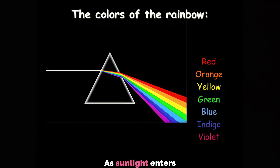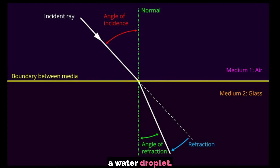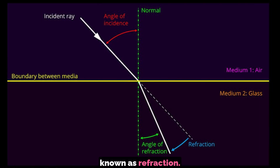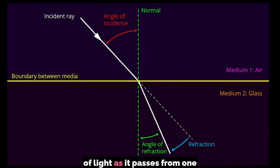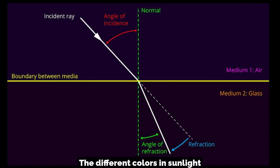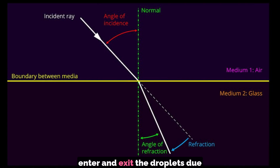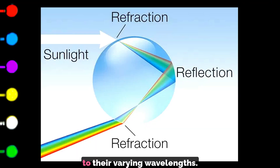As sunlight enters a water droplet, it undergoes a process known as refraction. Refraction refers to the bending of light as it passes from one medium, air, to another, water. The different colors in sunlight bend at different angles as they enter and exit the droplets due to their varying wavelengths.